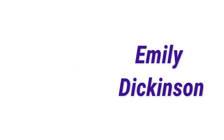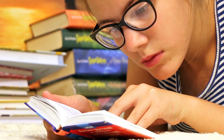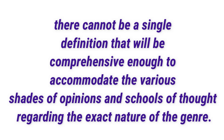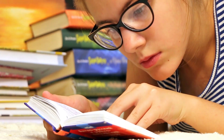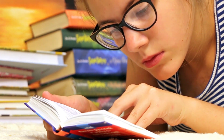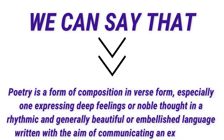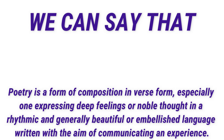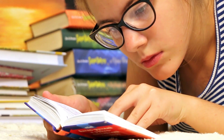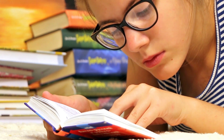From the above definitions and explanations of what poetry is, it is clear, as we have said earlier, that there cannot be a single definition creative enough to accommodate the various shades of opinion and schools of thought regarding the exact nature of the genre. Finally, we may attempt a definition that strives to distill the various elements of the explanations made so far. Poetry is a form of composition in verse form, especially one expressing deep feelings or noble thoughts in a rhythmic and generally beautiful or embellished language, written with the aim of communicating experience. This definition contains the essential elements of the genre of poetry — that is, imagery, rhythm, sound, and diction — to which we will turn our attention in the next unit.